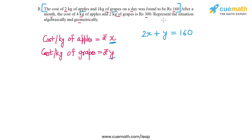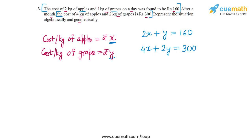The second piece of information is that the total cost of 4 kg of apples and 2 kg of grapes is 300 rupees. The cost of 4 kg of apples is 4x rupees and the cost of 2 kg of grapes is 2y rupees. So the second equation we get is 4x + 2y = 300.